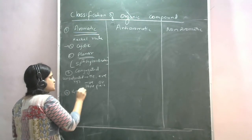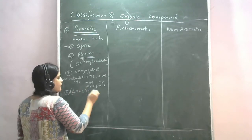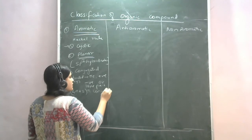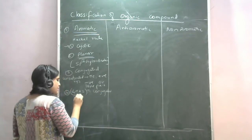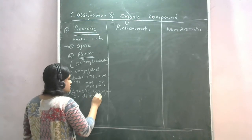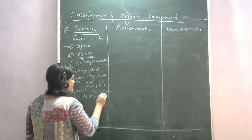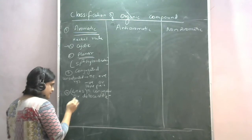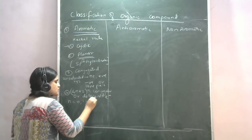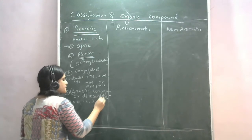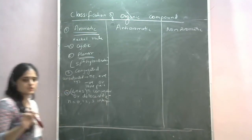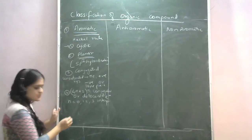The fourth condition: the compound must have 4N + 2 pi conjugated, delocalized electrons, where N is equal to 0, 1, 2, 3 (any integer). Let me give you an example so you can understand this.